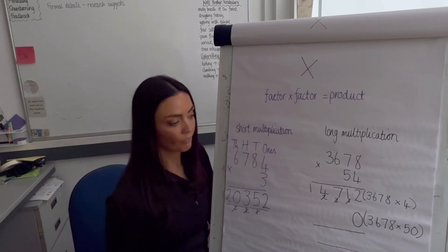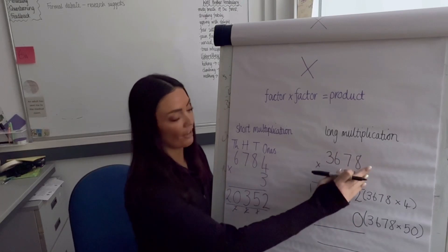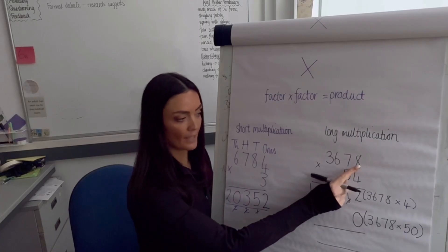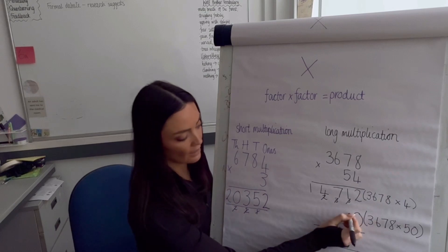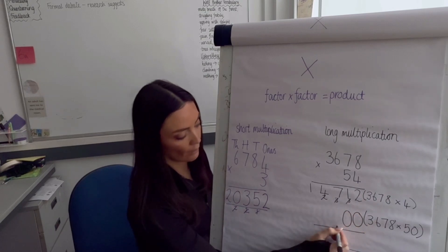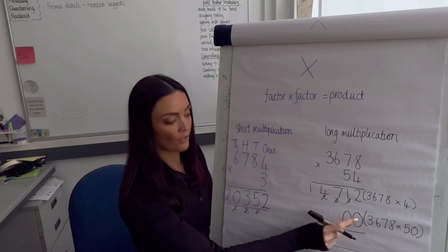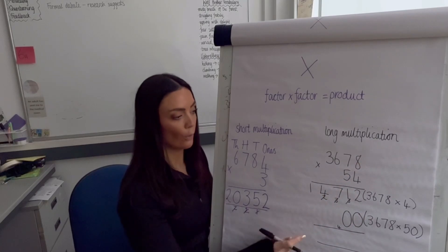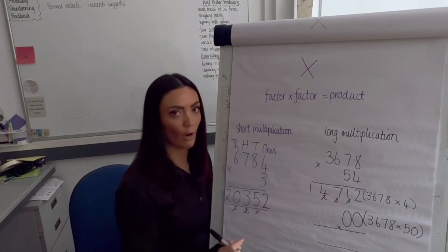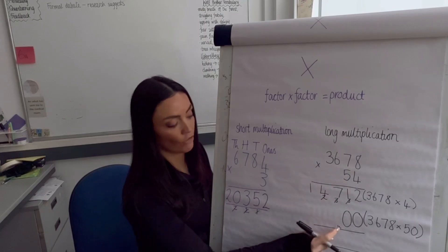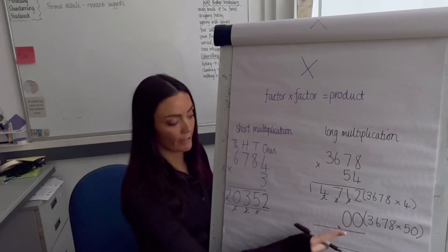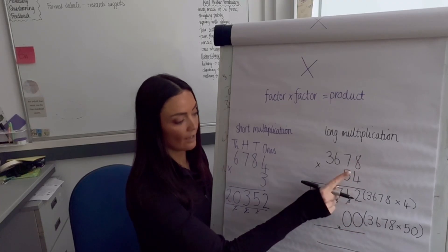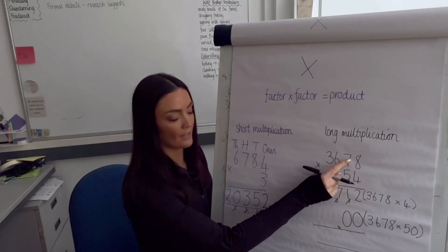Now everything is multiplied by 50. We have 50 times 8, or 5 times 8 = 40, so we put the 0 and exchange the 4 underneath. The reason we have that zero is that 50 times 8 is actually 400 — that placeholder is really important. Then 50 times 70, or 5 times 7 to help us.